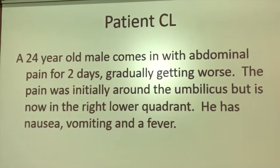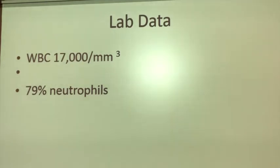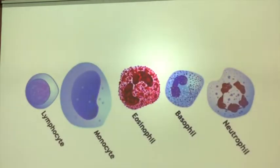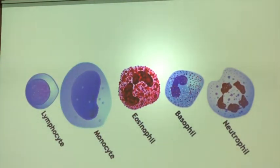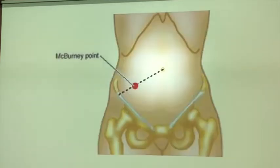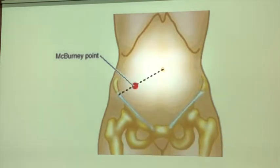Let's talk about another patient. A 24-year-old comes with abdominal pain for two days, gradually getting worse. The pain was initially around the umbilicus but is now in the right lower quadrant. He has nausea, vomiting, and a fever. His white blood cell count is 17,000 — normal is 11,000 or less — and 79% neutrophils. Neutrophils are generally the bacteria-fighting cells, whereas lymphocytes fight viruses. There's tenderness at McBurney's point, the right lower quadrant of the abdomen.